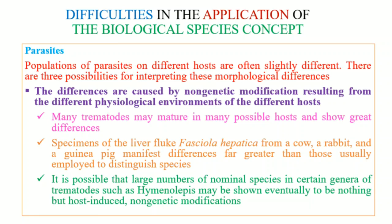For example, if we look at trematodes, many trematodes may mature in many possible hosts and show great differences. For example, the liver fluke, Fasciola hepatica — if you take it from cows, rabbits, or pigs, there are many differences due to their host species and the different physiological environments.